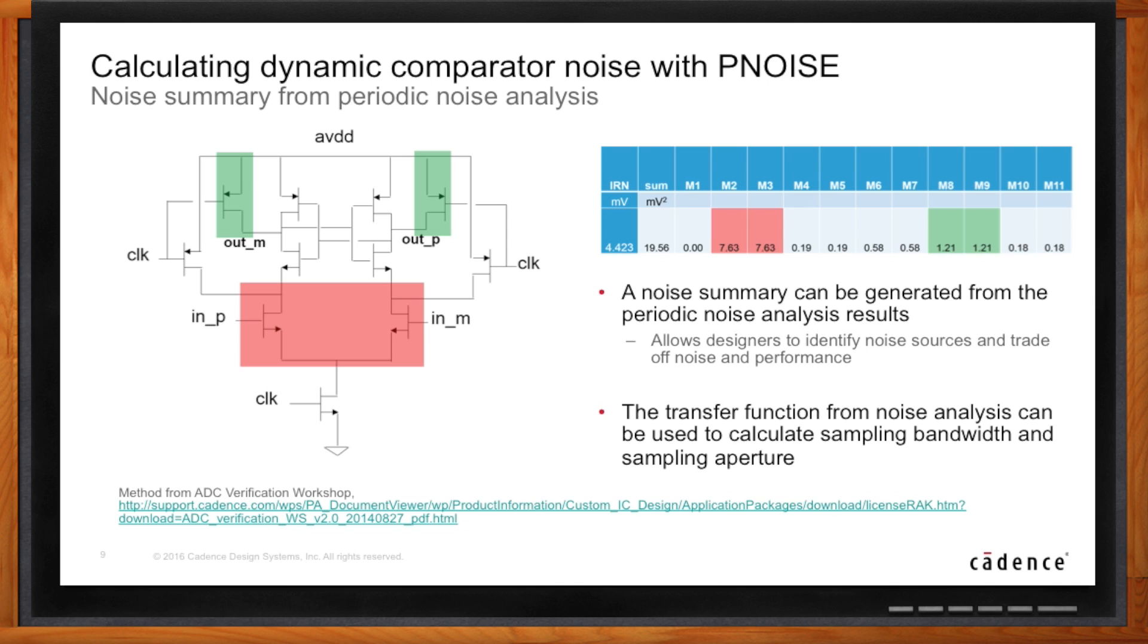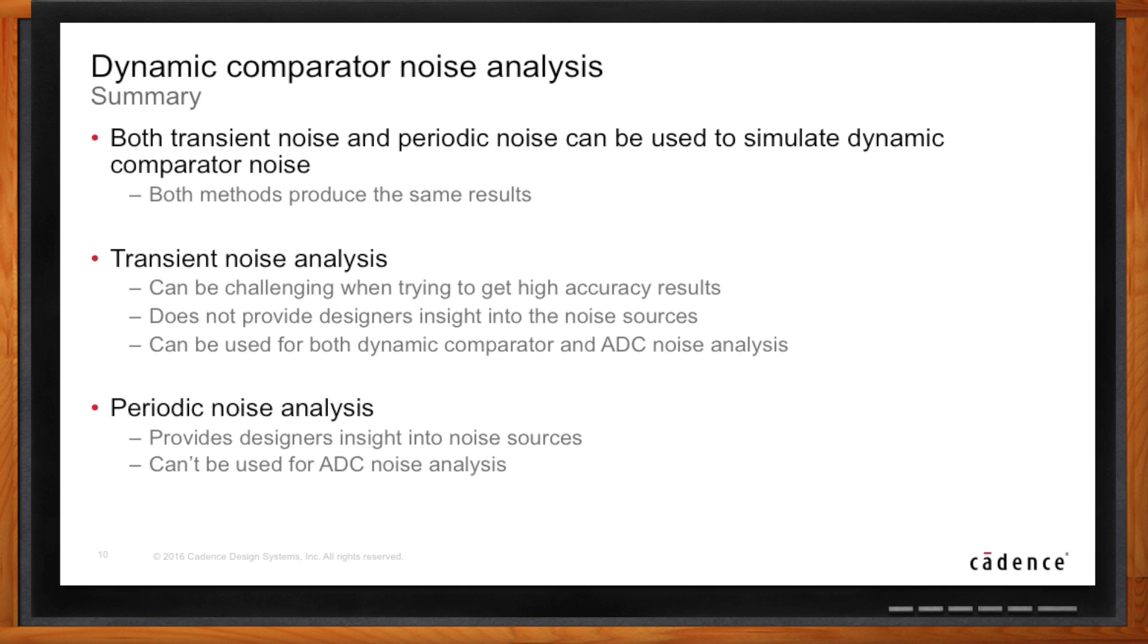Can you give me a quick summary of your main points? There are two methods for doing the noise analysis, transient noise and periodic noise, and both give the same results. You can use transient noise when the problem can't be solved with periodic noise, when you're trying to do something with verification. If you're doing an ADC, transient noise is well suited for that problem. In this case, because we're designing a block and we want to know what the noise is from each component inside that block, periodic noise is a better choice. So you can think of periodic noise as a design tool and transient noise as a verification tool.